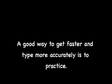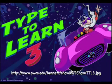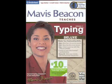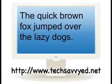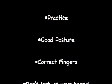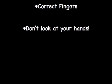You should try not to look at your hands while typing. A good way to get faster and type more accurately is to practice. One of the programs we'll use in class is called Type to Learn 3 by Sunburst Technology, and the other program we'll use quite often is Mavis Beacon Teaches Typing. You might want to try typing this sentence to warm up before beginning to type a document: "The quick brown fox jumped over the lazy dogs." This sentence contains all the letters of the alphabet and will help your fingers get warmed up for typing. So remember: practice, have good posture, use the correct fingers on the right keys, and don't look at your hands.